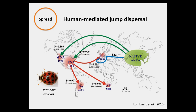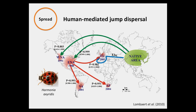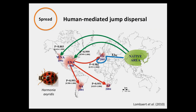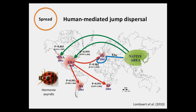Introduced populations can themselves serve as beachheads for the establishment of other introduced populations. This pattern is nicely illustrated by Harmonia axyridis, a ladybird beetle used in biological control. Ladybird beetles consume aphids, which are agricultural pests. This species is native to Eurasia and was introduced into North America, and those North American populations — based on DNA variation — are believed to be the source of introductions to other populations worldwide. This global jump dispersal makes it difficult to predict the large-scale pattern of invasion exhibited by introduced species.